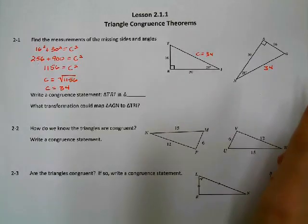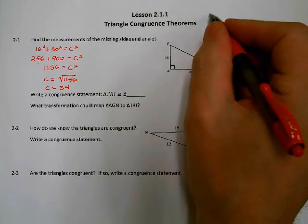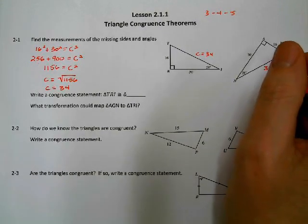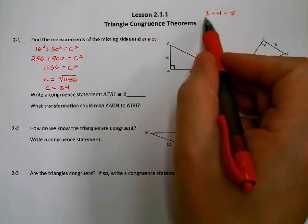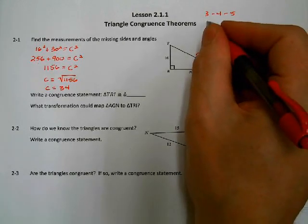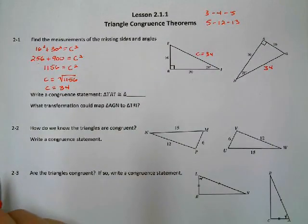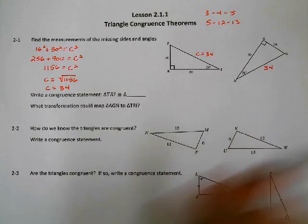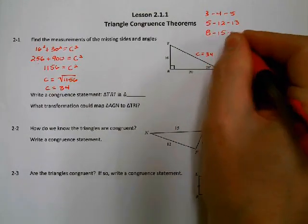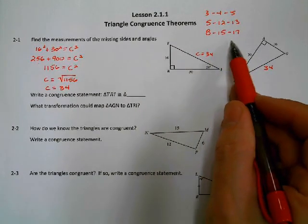Remember, there are some shortcuts you can use with the Pythagorean theorem — the Pythagorean triples. One triple is a 3-4-5 triangle, where all the numbers come out to integers. 3 squared plus 4 squared equals 5 squared. Another common one is 5-12-13: 5 squared plus 12 squared equals 13 squared. And a less known one is the 8-15-17 triangle: 8 squared plus 15 squared equals 17 squared.